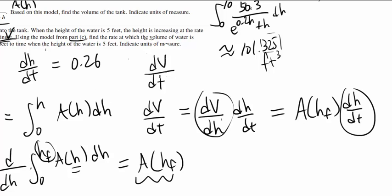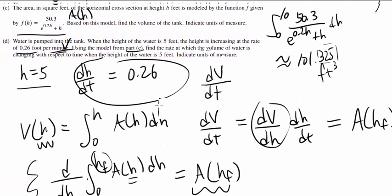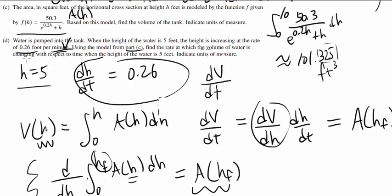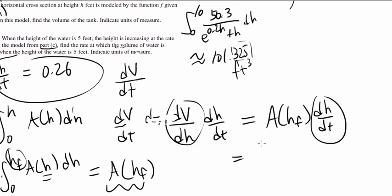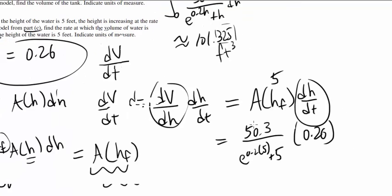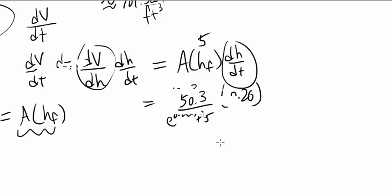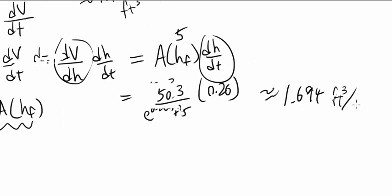We know dh dt, we know the function A of h, and we know the final height we are going to is 5. So this is the same thing as 50.3 over e to 0.2 times 5 plus 5 for the A of 5, and dh dt is 0.26. Plugging this in, you should obtain, round to the thousands, 1.694 cubic feet per minute.